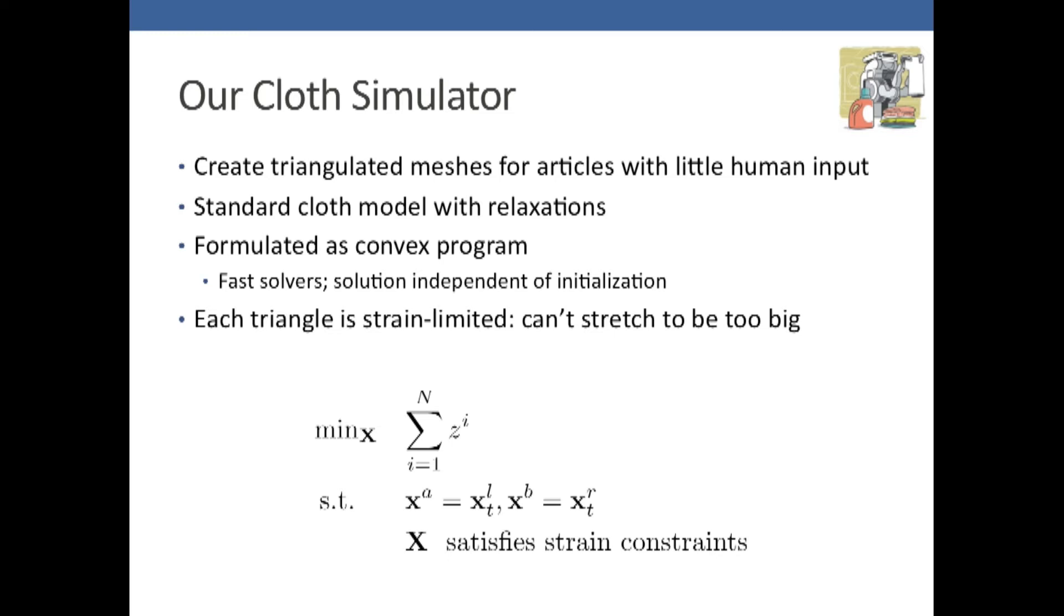Our convex program minimizes the potential energy, which is the z-coordinates of each node in the mesh, such that the strain constraints are met. The other constraints are that the left point is where the robot's left gripper is, and the right point is where the robot's right gripper is.